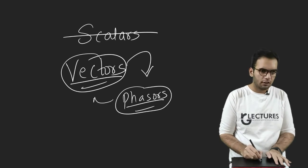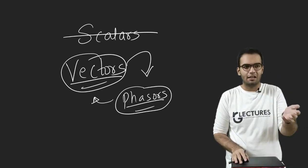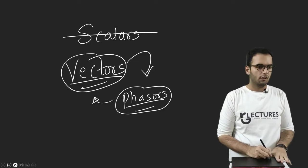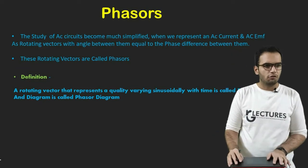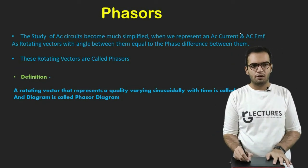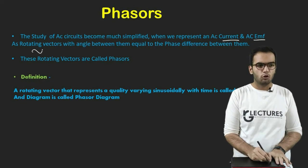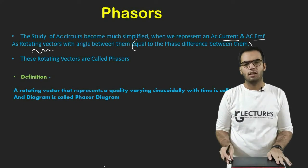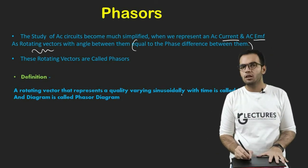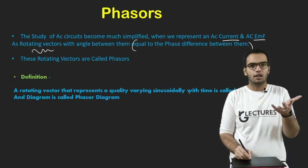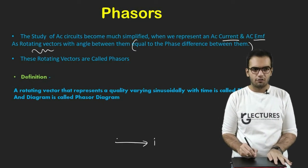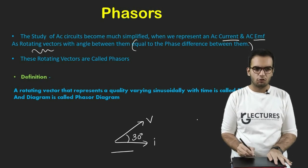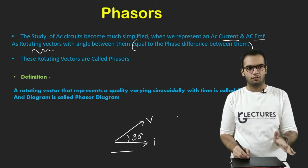So what are Phasors? Phasors are just vectors used to represent the AC Voltage or AC Current. That was the informal definition. Now the formal definition: the study of AC Circuits becomes much simplified when we represent AC Current and AC EMF as rotating vectors, with the angle between them equal to the phase difference between them. Suppose the phase difference between Voltage and Current is 30 degrees — I will draw the current vector here and the voltage vector at 30 degrees. This is called a Phasor Diagram.